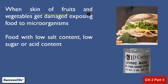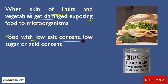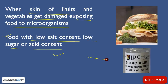When the skin of fruits and vegetables gets damaged, it exposes the food to micro-organisms — they can grow there, enter inside, and spoil it. Similarly, food with low salt content, low sugar, or low acid actually promotes the growth of micro-organisms. Salt, sugar, and acid suppress micro-organism growth, so wherever these are low, micro-organism growth is enhanced. Citric acid is one such acid — if something has less of it, micro-organism growth there will be higher.